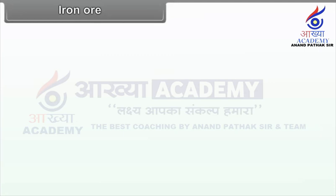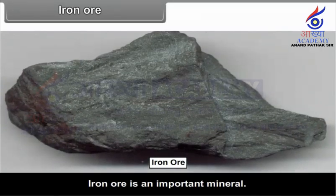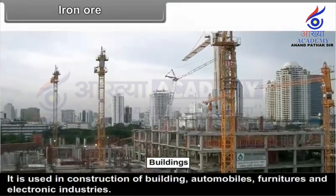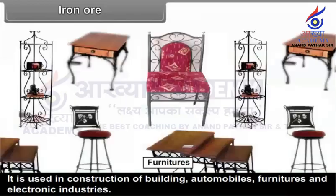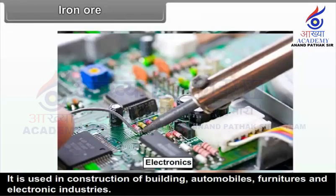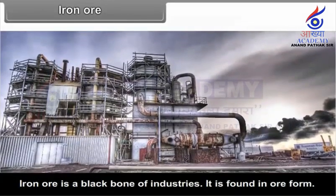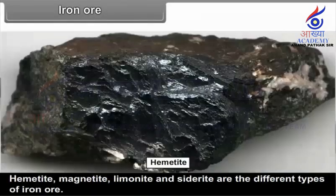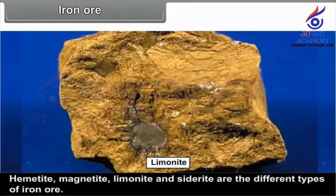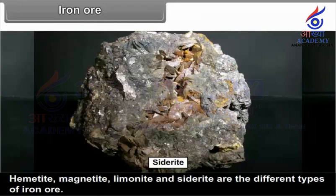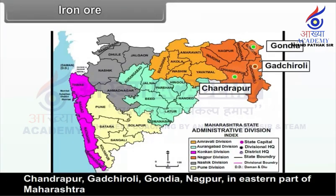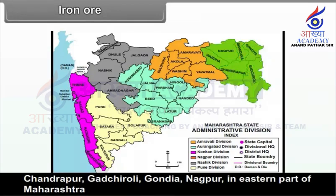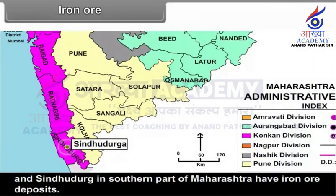Iron Ore. Iron ore is an important mineral used in construction of buildings, automobiles, furniture and electronic industries — it is the backbone of industries. It is found in ore form. Hematite, magnetite, limonite and siderite are the different types of iron ore. Chandrapur, Gadchiroli, Gondiya, and Nagpur in the eastern part of Maharashtra, and Sindhudurg in the southern part of Maharashtra have iron ore deposits.